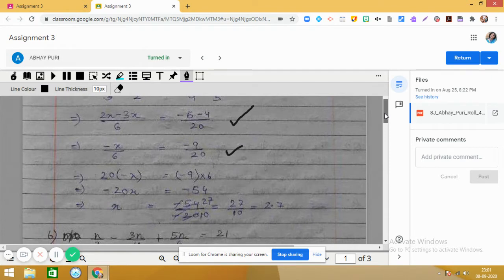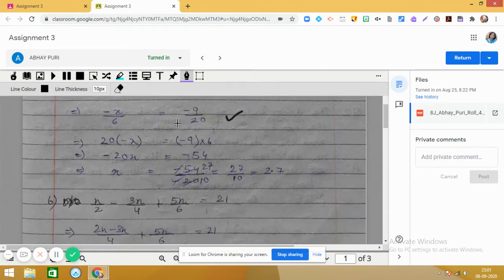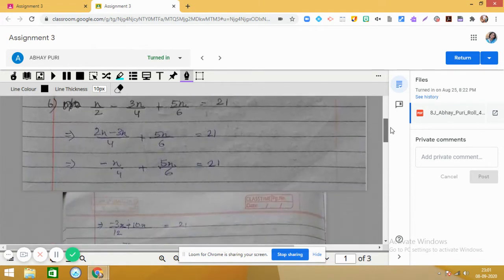After that you do the cross multiplication. So once you do the cross multiplication, then we get 20 × -x = -9 × 6. Simplify this, we get x = 27/10, that is 2.7. So this first question is correct.